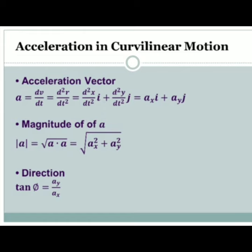The magnitude of A is the square root of A dot A, which equals the square root of ax² plus ay². The direction is tan theta equals ay over ax.